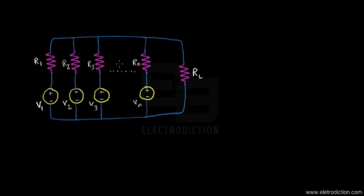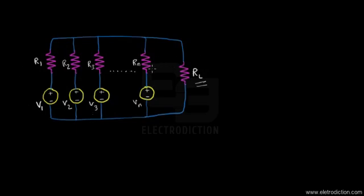We have internal resistances R1, R2, R3 till RN. So if we have a number of voltage sources and their resistors connected in series with each other — viewing each arm as a single voltage source — we basically have a number of voltage sources connected in parallel to each other, all driving a load resistor RL. If we try to simplify this circuit, we can do it by using Millman's theorem.